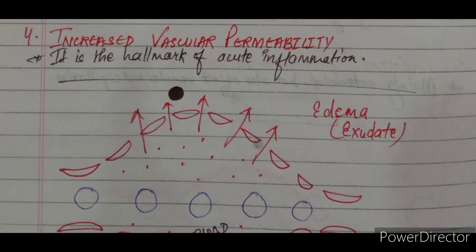Hello friends, welcome. Today we will continue yesterday's topic, that is inflammation. Yesterday we studied up to the third step of vascular events. Today we will proceed from the fourth step, so let's start the video. The fourth step of vascular events is increased vascular permeability, which is the hallmark of acute inflammation. To fight with the microbe, how WBCs come out — the events going on — we will discuss in today's lecture.